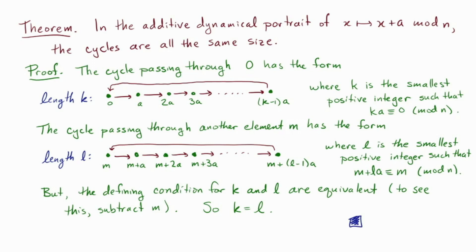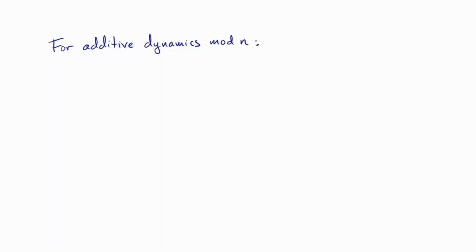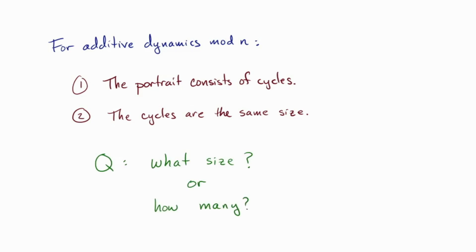Okay, great. Now we've shown two things about the additive dynamics modulo n. First, the portrait consists of cycles, and second, the cycles are all of the same size. All that's left to give a complete description is to figure out what that single common size is, and how many there are. But actually, these two quantities determine each other. So in that sense, it's equivalent to ask either of these questions. Answering one will actually give the answer to both.